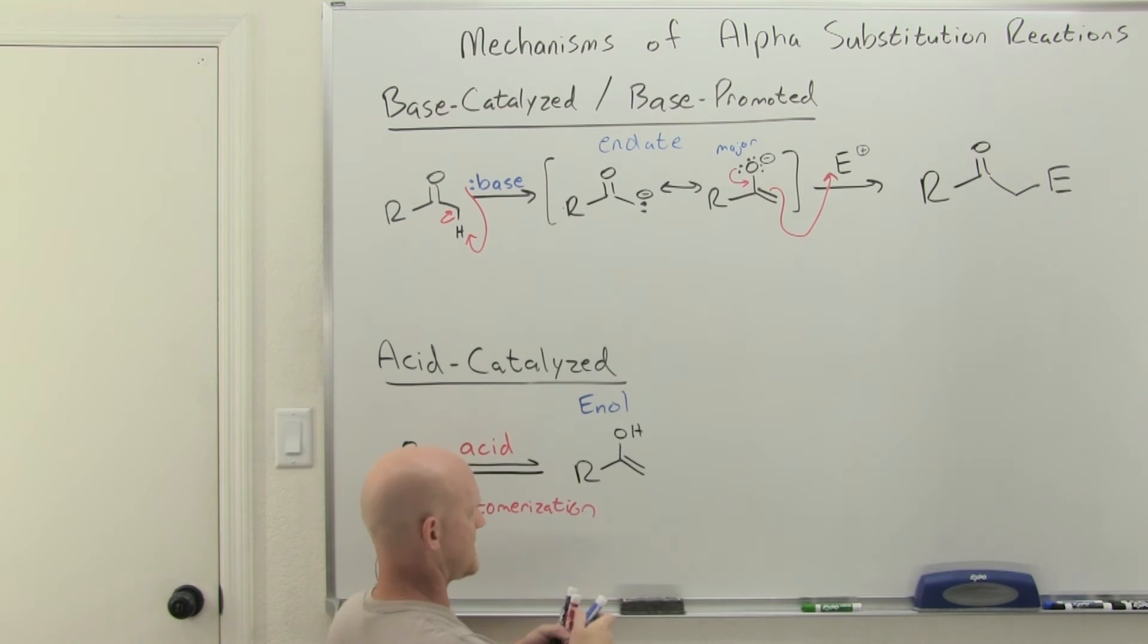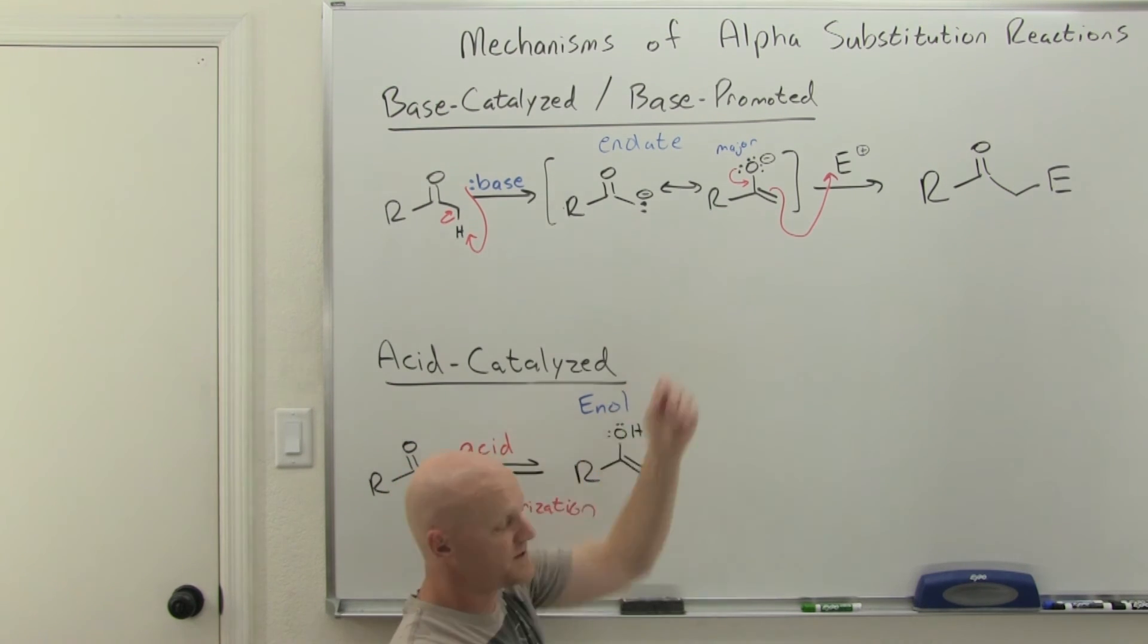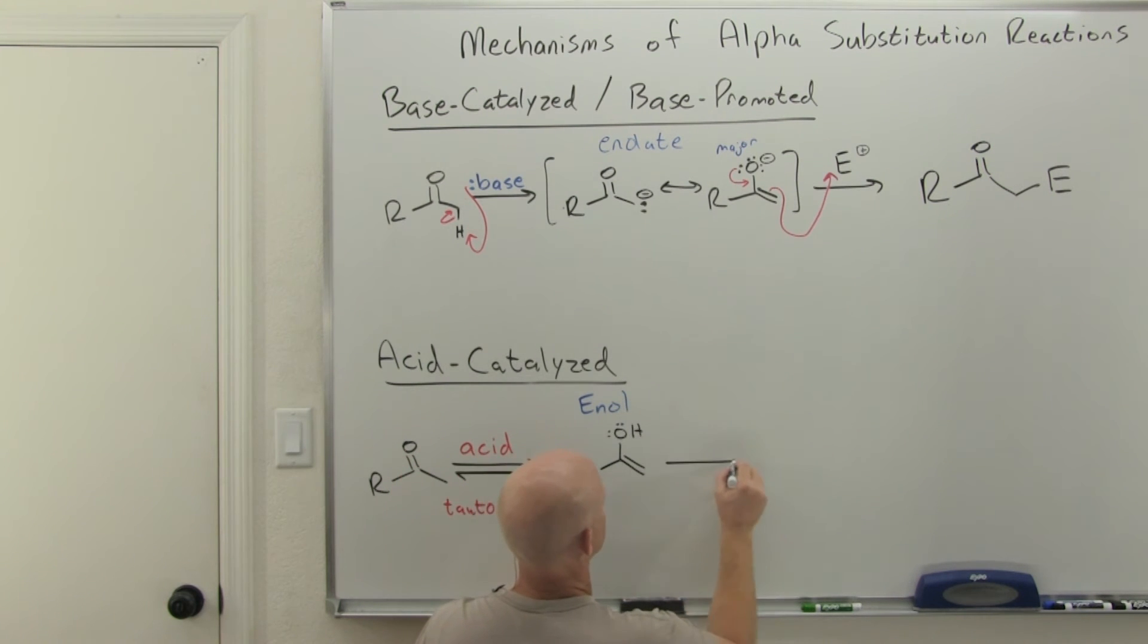And he is our nucleophile. In this case, the arrow pushing is going to look remarkably the same as what we see here. We're just going to have an extra step at the end. In this case, we're also going to put an electrophile in that solution. Doesn't also necessarily have to have that positive charge. We're going to push electrons from the oxygen to form a pi bond, and then the pi bond is going to come and bond to that electrophile at the alpha carbon.